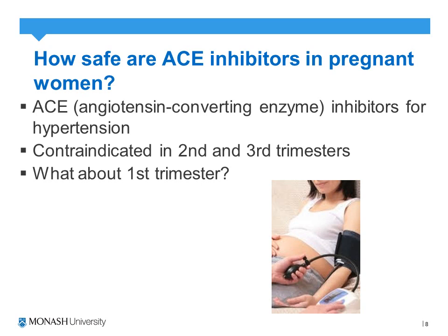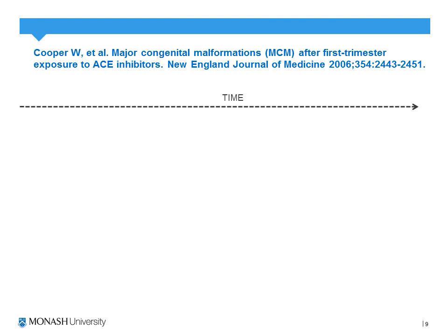The example we use is to answer the question: how safe are ACE inhibitors in pregnant women? ACE inhibitors are used for hypertension and are contra-indicated during the second and third trimesters, but this question asks about the first trimester, when many women may not know they are pregnant for the first four to six weeks. This is a study done in 2006 — a cohort study to assess major congenital malformations after first trimester exposure to ACE inhibitors.